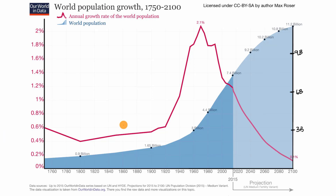What we have here is a really interesting visual that shows world population growth from 1750 all the way to 2100. Obviously this isn't 2100 yet, so it's doing some projecting for roughly the next 80 years. It also shows the absolute world population over that time period.